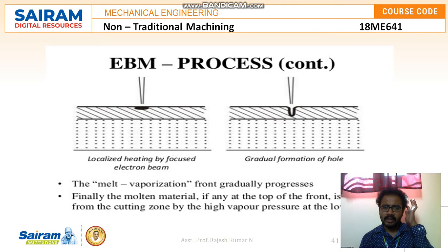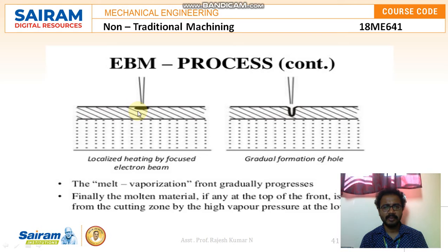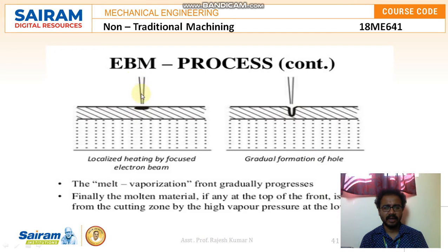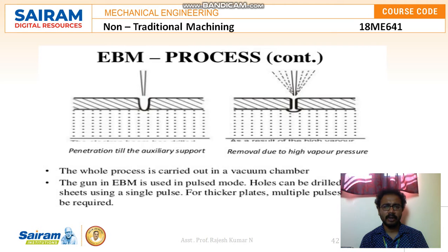Now we'll look at how excess material is removed from the workpiece. When the stream of electrons directly hits the surface of the workpiece, it either melts or vaporizes the material. This process occurs due to surface erosion and high pressure from the electron charges. The melting or vaporization gradually progresses because of the continuous supply of electrons. Finally, the molten metal at the top of the cutting front is expelled from the cutting zone by the high vapor pressure at the lower part. The whole process is carried out in a vacuum chamber, since the presence of gas leads to contamination that sticks to the workpiece.